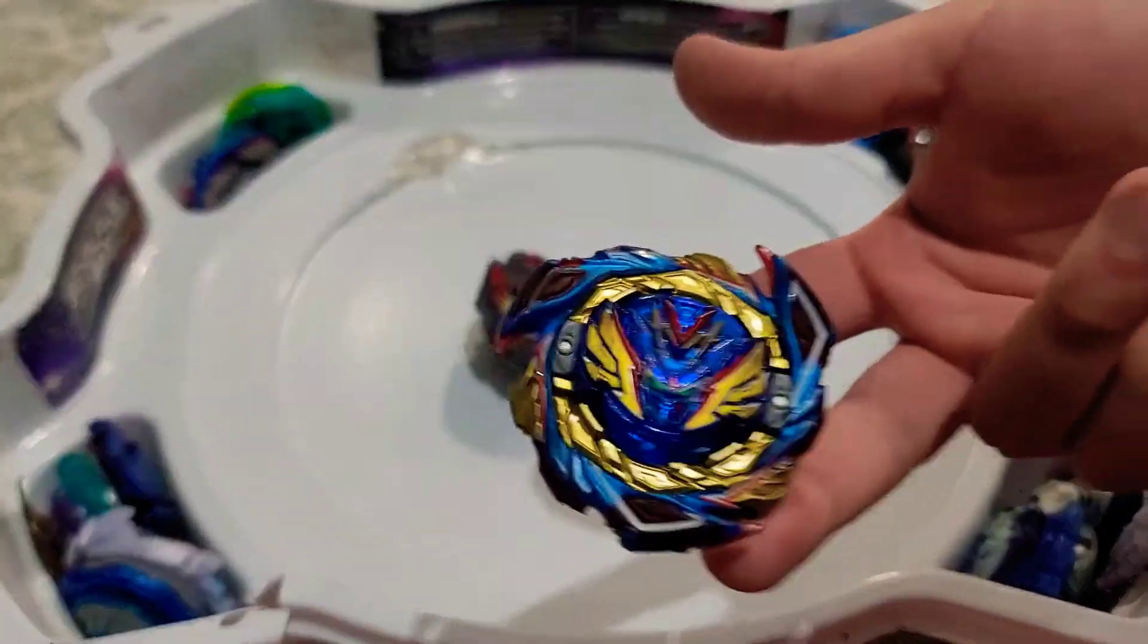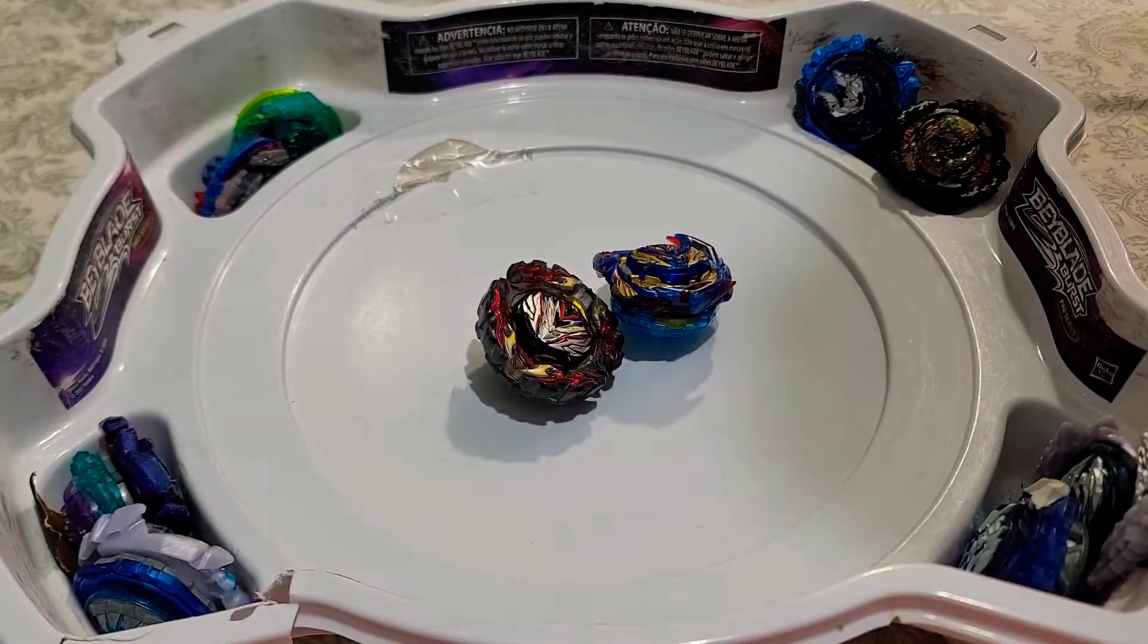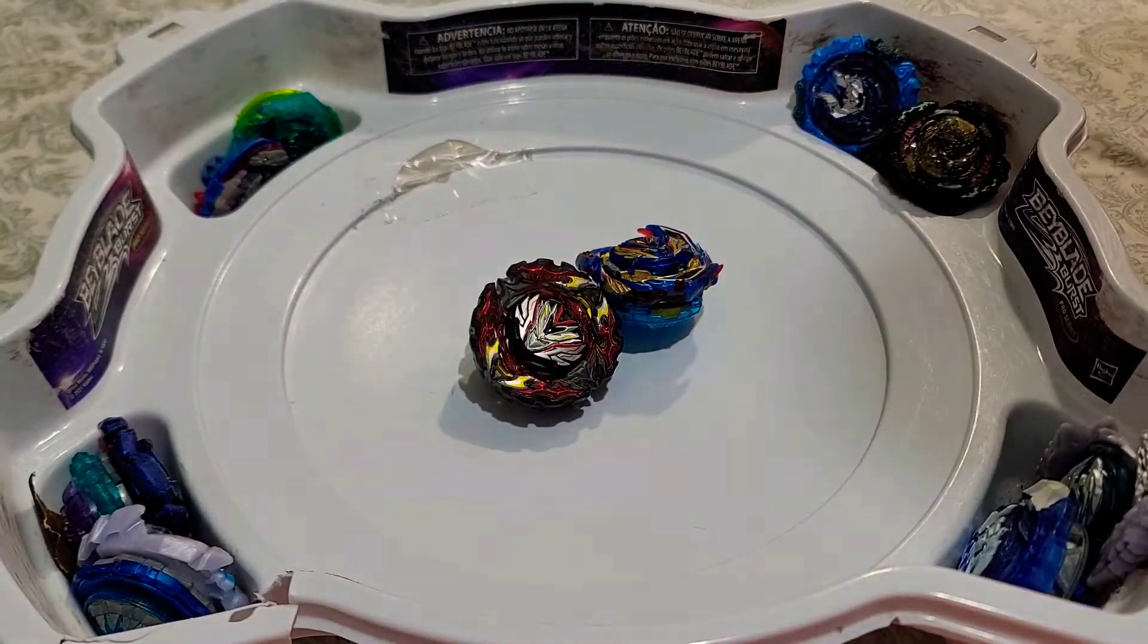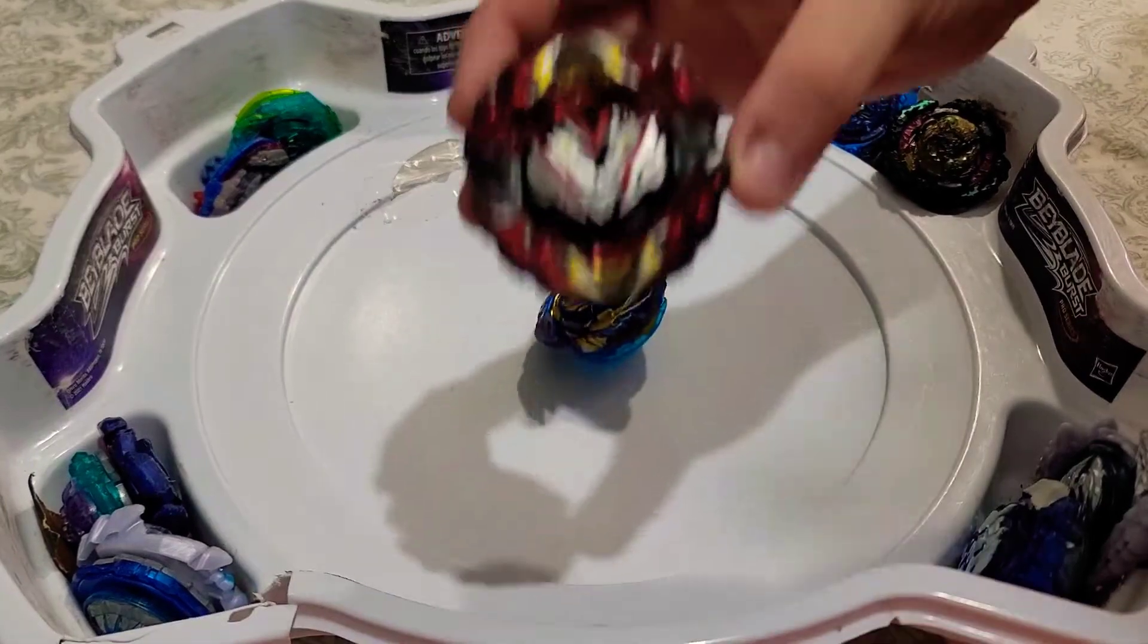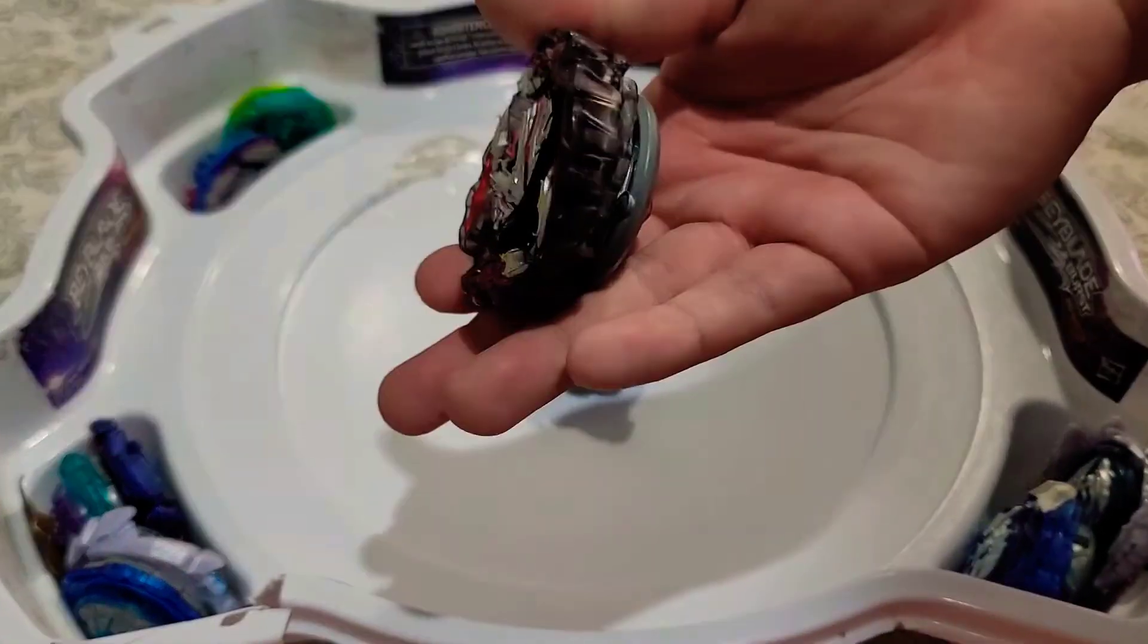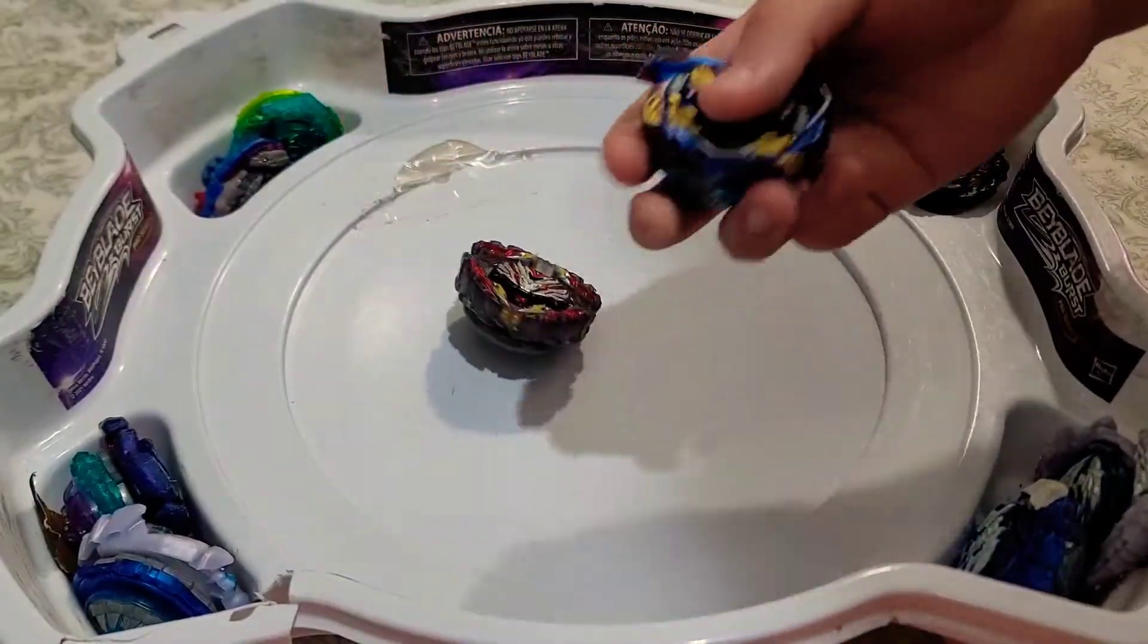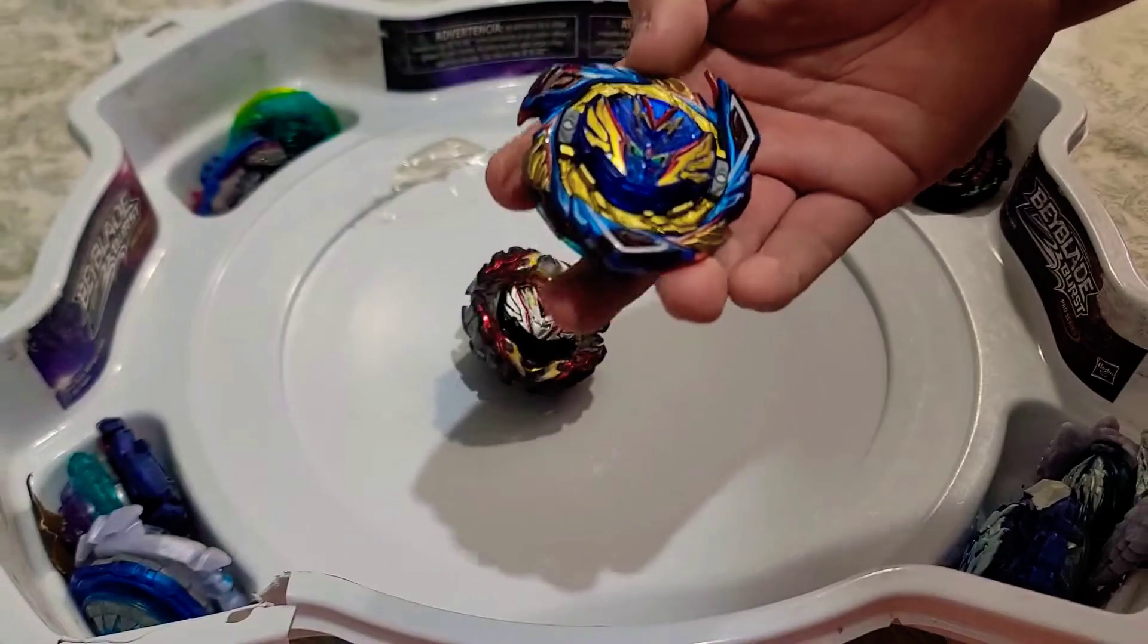For this one he's going to be taking on a Savior Valkyrie. We have the two Valkyries going head to head with each other. We have a Prominence Valkyrie which is a defense combo, which is literally impossible to burst, against the classic attack heavy hitting Valkyrie here.